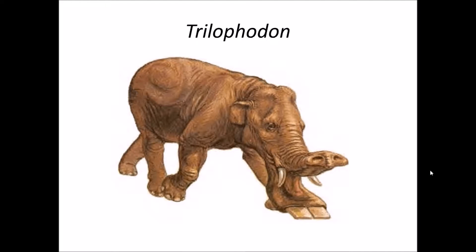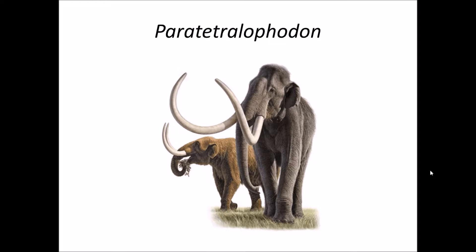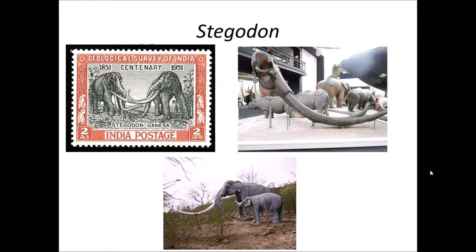Trilophodon were elephant-like creatures, and fossils of Trilophodon are also recovered from the upper Shivalik. They belong to the family of elephants, that is Proboscidea. Paratetralophodon were large-size elephant-like creatures and also belong to Proboscidea. Stegodon were very large-size elephant-like creatures that also belong to the family Proboscidea.